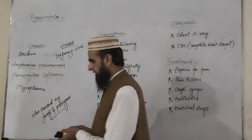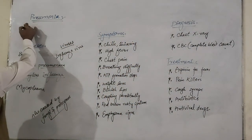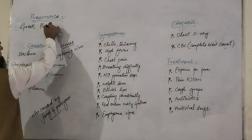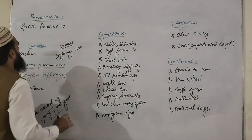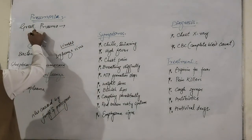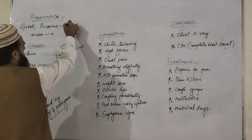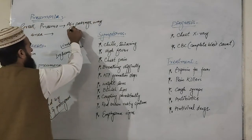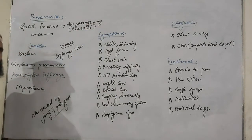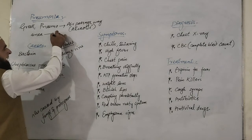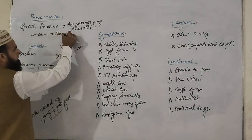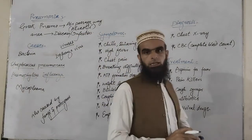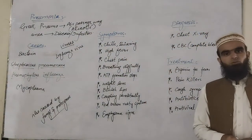One of them is pneumonia. Basically, pneumonia is derived from two Greek words: pneumo and ania. Pneumo means air passageway or alveoli. As far as ania is concerned, ania is a word used for disease or infection. So normally we can say that pneumonia is an infection of the air passageway or alveoli.